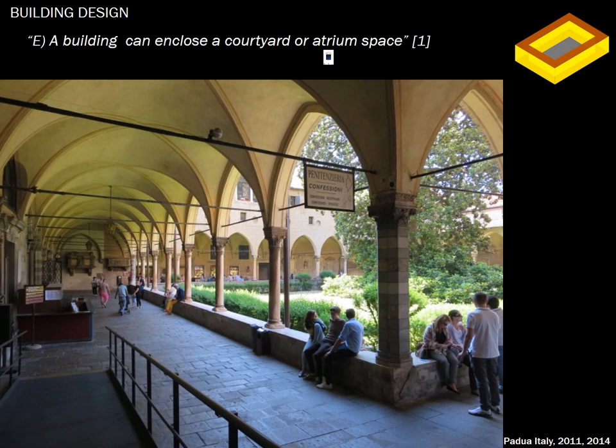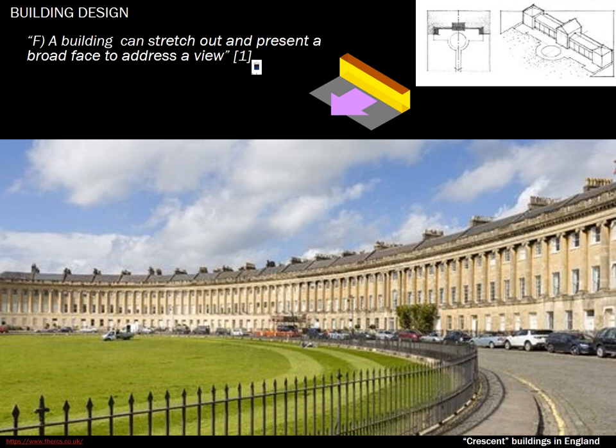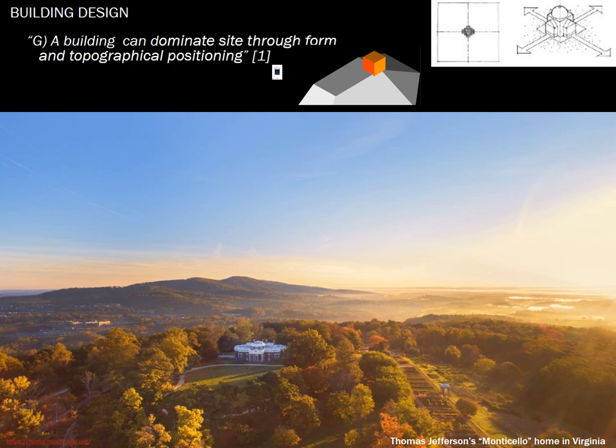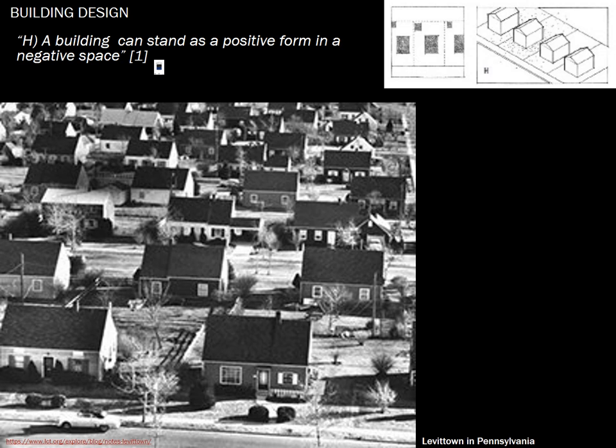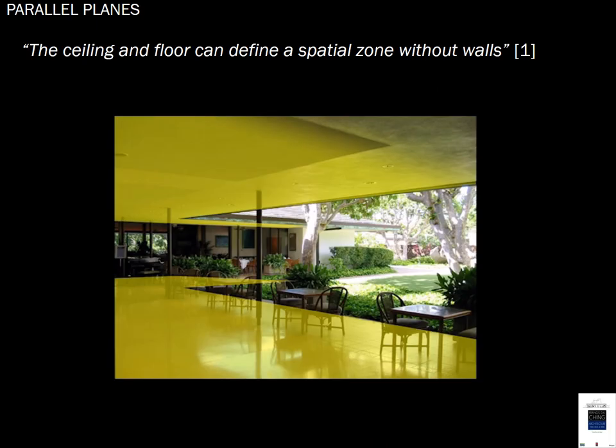The Royal Crescent in England, a curved crescent building, defines the entire area in front of it by virtue of its curved shape. Monticello in Virginia — a famous design atop a hill, also related to Jefferson's University of Virginia — has the building dominating the site, something Frank Lloyd Wright would not have done in his organic design; he would build into the hill. Levittown after World War II brought mass-produced GI Bill housing, where buildings stand as positive forms in negative space.